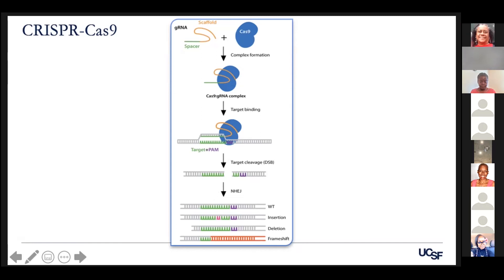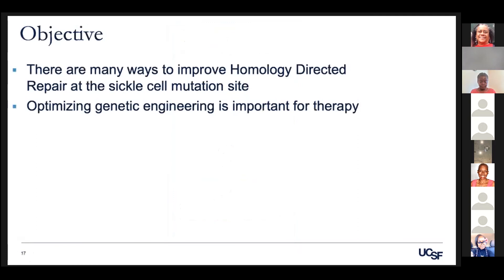There are many ways to use CRISPR for sickle cell engineering. Our objective was to optimize the process — so that once we make a cut, we make sure that most of the cells have that gene corrected. There are many technical approaches, but the goal is to optimize and come up with the best possible method.